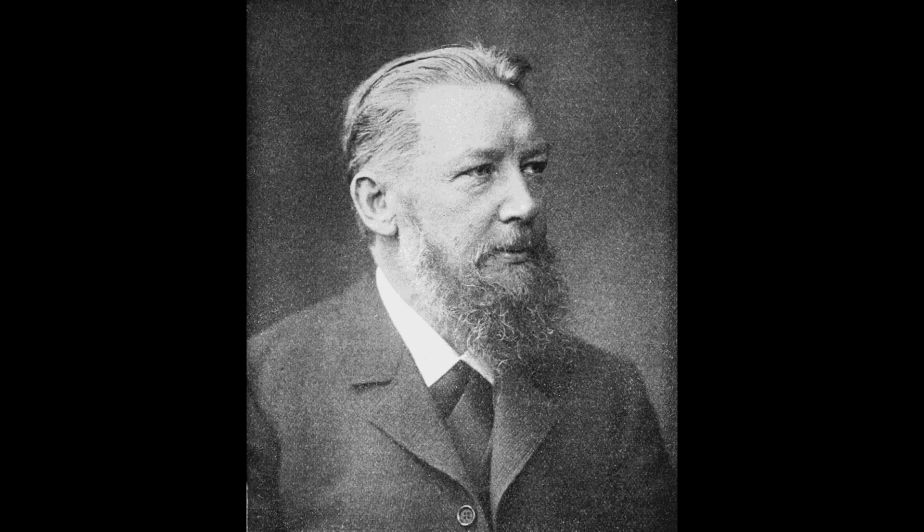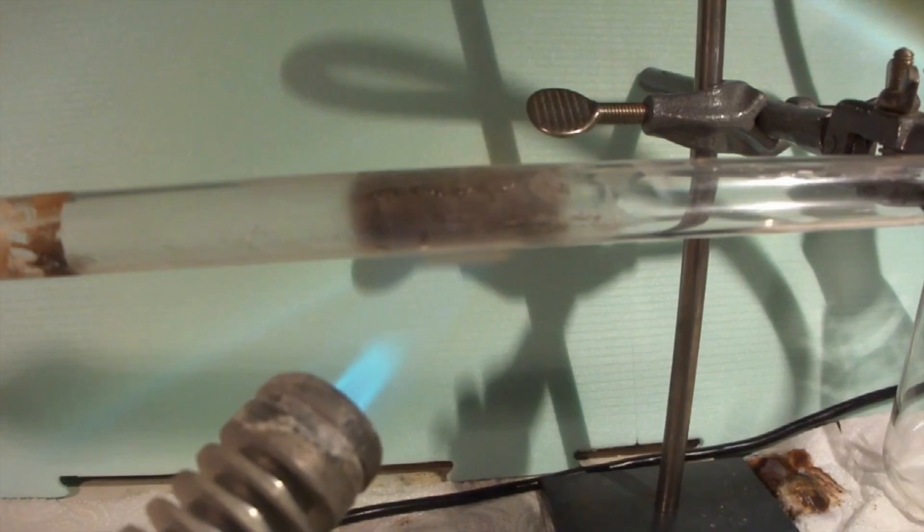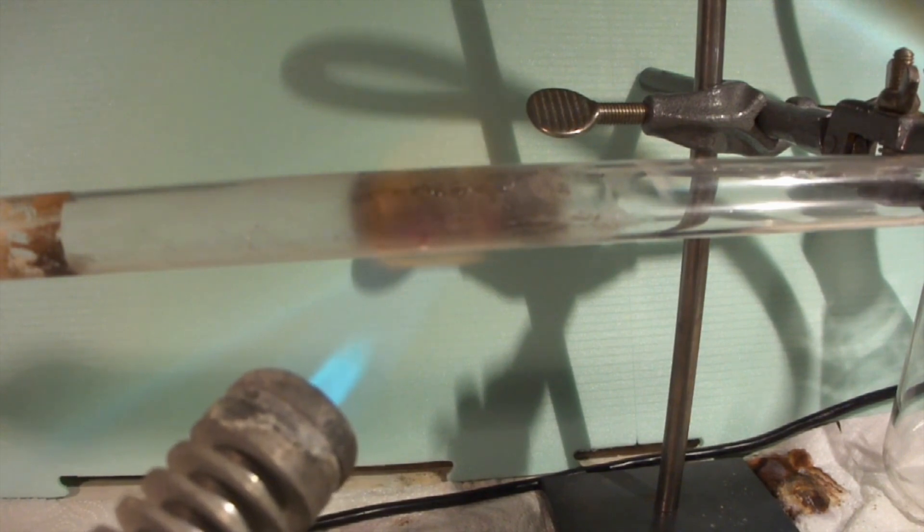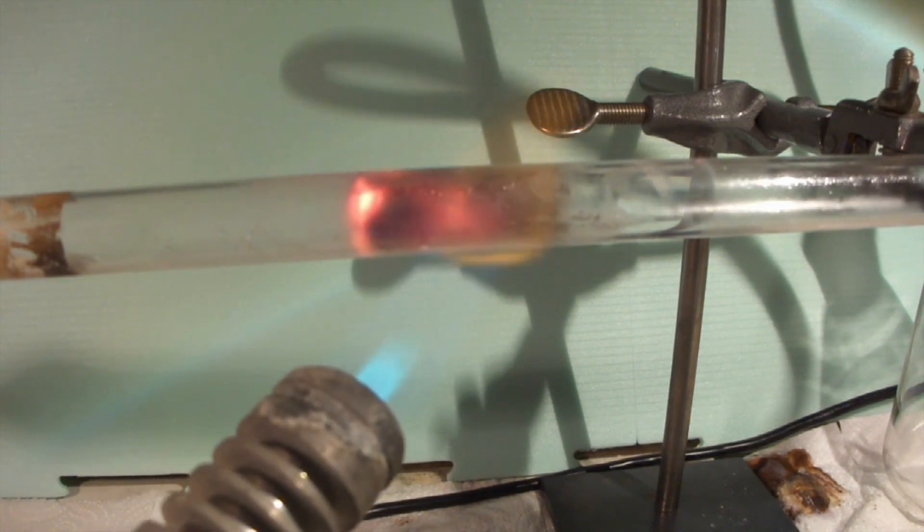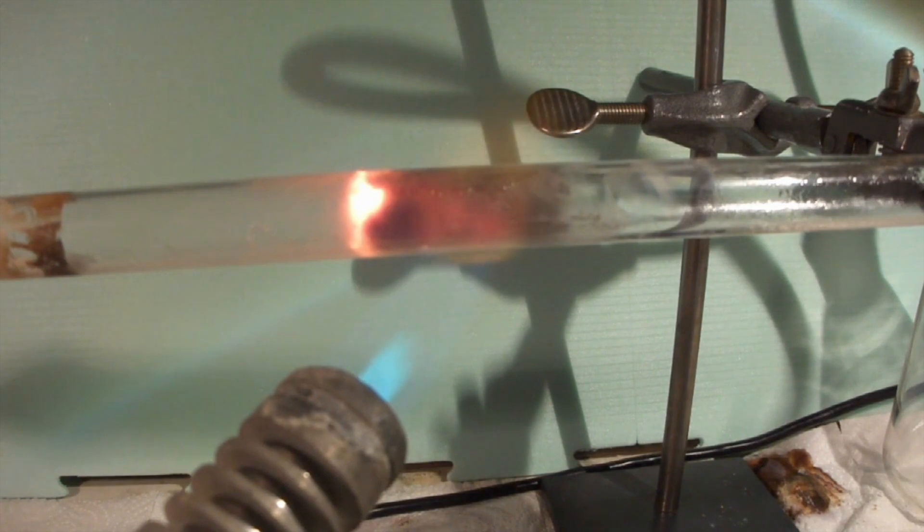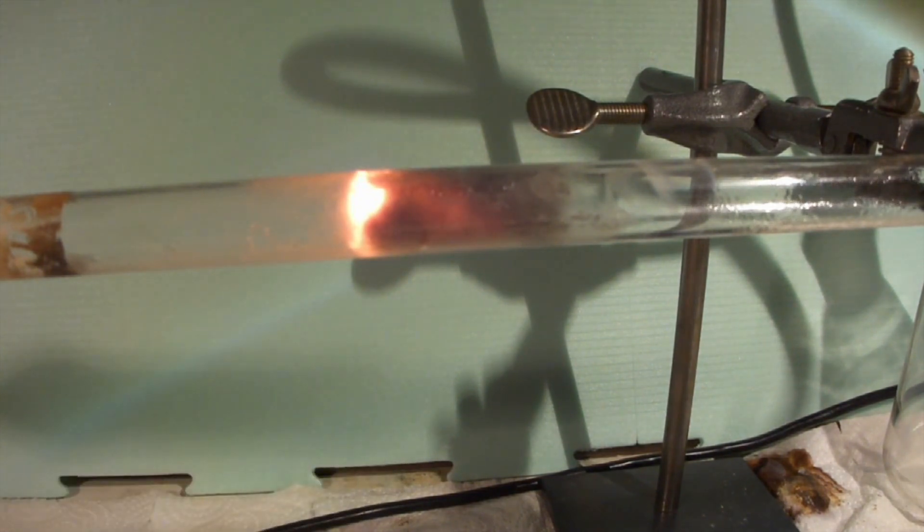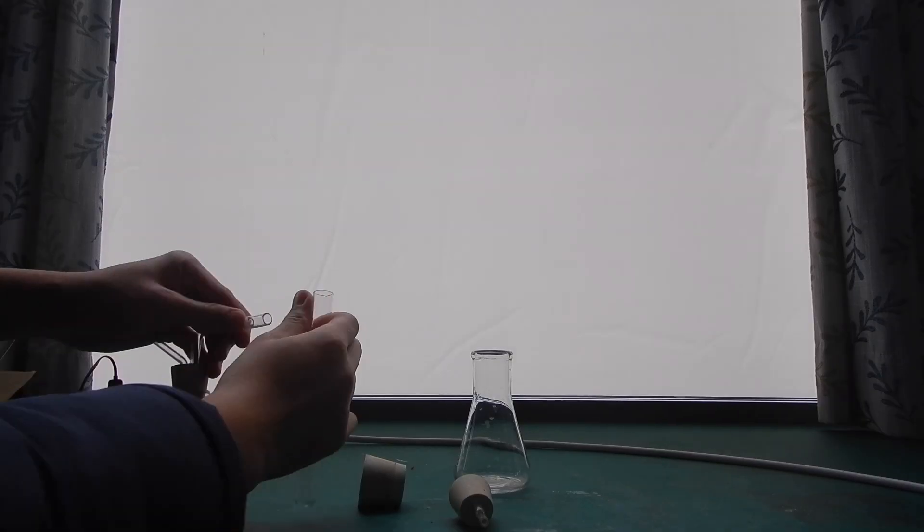This method we are using is known as the Ostwald oxidation since it was first discovered by the German chemist Wilhelm Ostwald. It is still the most frequently used industrial method to make nitric acid. I made this video with a lot of references to a video of NurdRage since it was one of the few videos on YouTube that actually did this. The link is also down in the description. Let's get started.